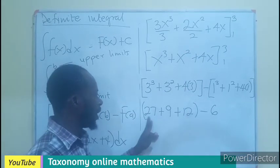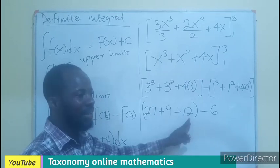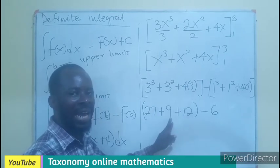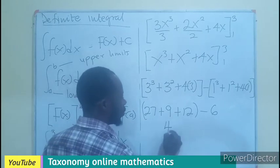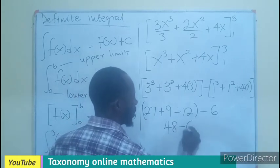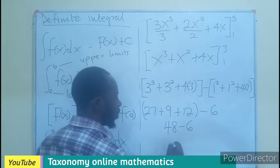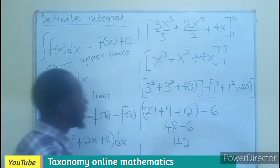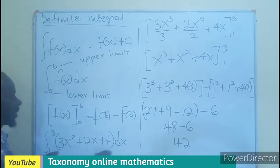In adding this, I believe this will give us 39. So, 39 plus 9 will be 48. So, 48 minus 6 gives us 42. Meaning, the value of this function.